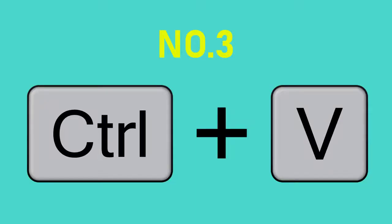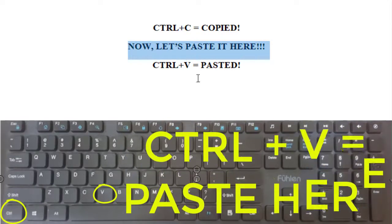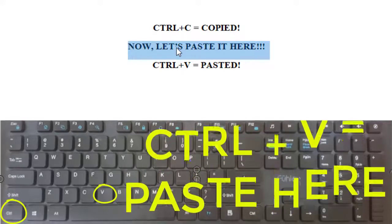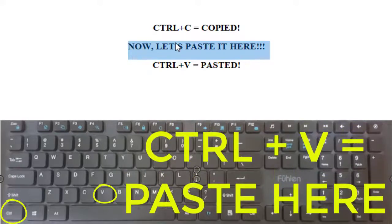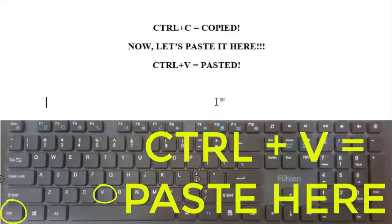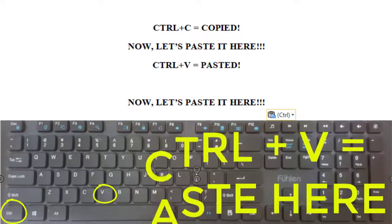Number 3: CTRL and V — Paste. After using the CTRL and C command, the copy is ready. Go to the place where you want to paste and hit CTRL and V. You've made a clone out of that. Remember, not only the copy command can go with paste — paste can also go along with the cut command below.